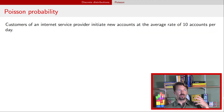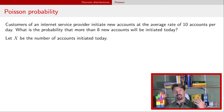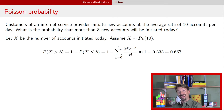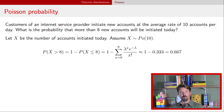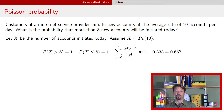Going back to the example, we let X be the number of new accounts initiated on that day and assume X has a Poisson distribution with a rate of 10. We use the cumulative distribution function to find the probability that X is greater than 8. That equals 1 minus the probability that X is less than or equal to 8. Summing the PMF from 0 up to 8, we find that for this example the probability of more than 8 new accounts is about two-thirds, or 0.67.